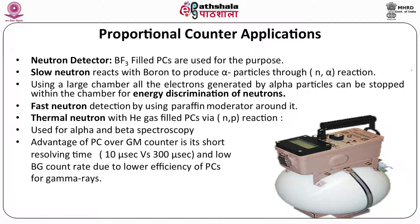For fast neutron detection, you would slow them down using paraffin moderated around the slow neutron detector. For thermal neutrons, you fill the chamber with helium-3 gas instead of BF₃, and thermal neutrons react via an (n,p) reaction, producing protons which being charged particles produce further ionization. These proportional counters are used for alpha and beta spectroscopy. An advantage of proportional counters over Geiger counters is their short resolving time — less than 10 microseconds — allowing them to resolve two closely spaced radiation events.